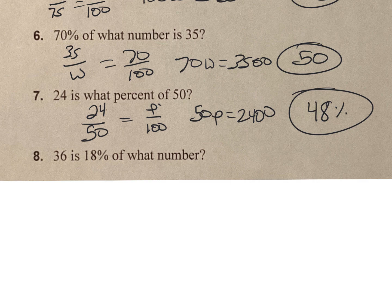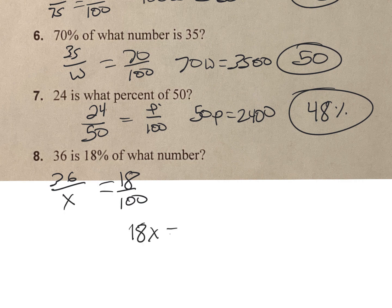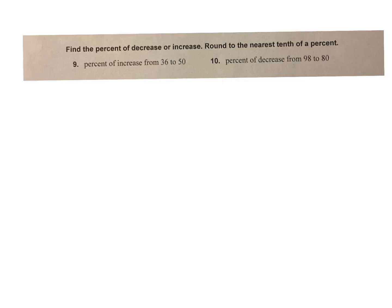36 is 18% of what number. 18 is my percent, 36 is the part of what number that I don't know, so we have 18x equals 3,600. When I divide each side by 18, it gets me 200.